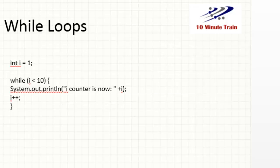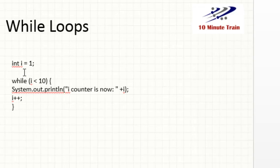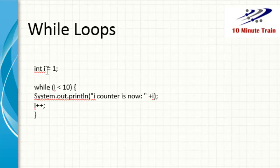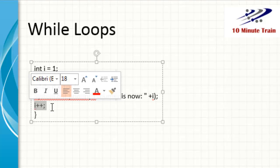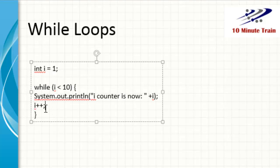With a while loop, you set the value — in this case we're setting i to one — and then we say while i is less than ten, go ahead and do the following: print 'i counter is now' and add the value of i with plus i, then increment it by one every time with i++. The while loop works with that condition statement.